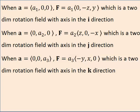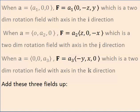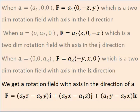Now, if we add up these three fields, we get the general rotation field with axes in the direction of the vector A.